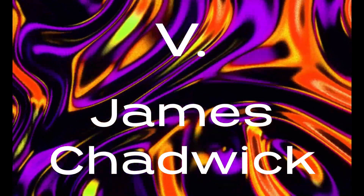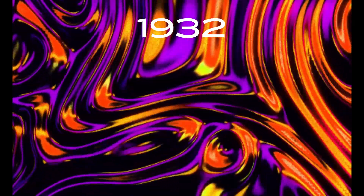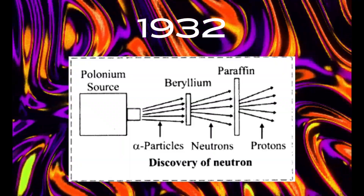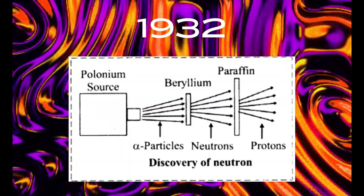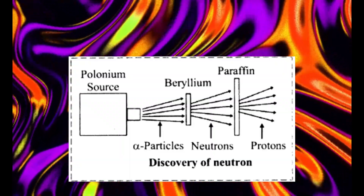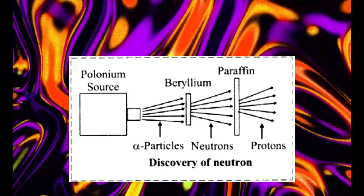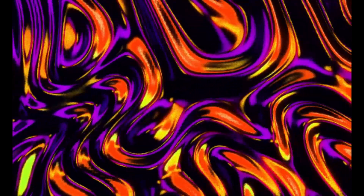Chadwick discovered the neutron in 1932 in a similar experiment to Rutherford's gold foil, except this time he was using beryllium and paraffin to shoot the alpha particles at, which split the neutrons and protons from each other. The discovery of the neutron was one of the last big parts of the atom that we know of today.